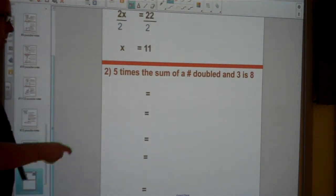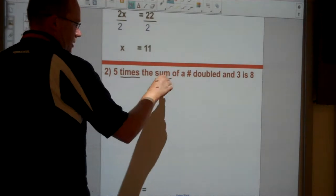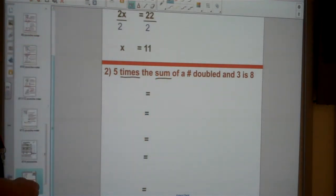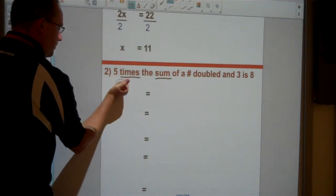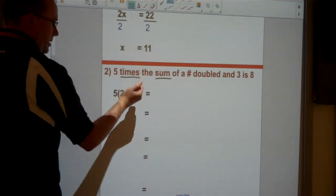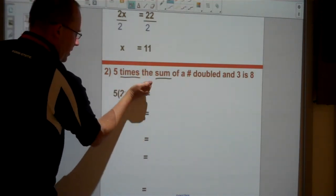5 times the sum of a number. Now I've got two properties here together, I've got times and sum. So I know I've got 5 times something at the start. But then where it says sum, I know that I'm going to have a plus in the middle here.